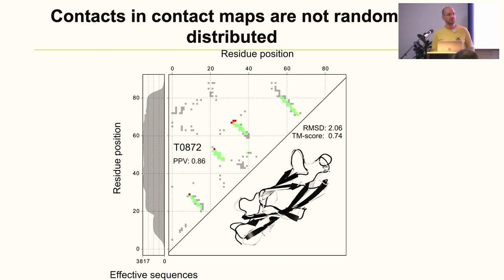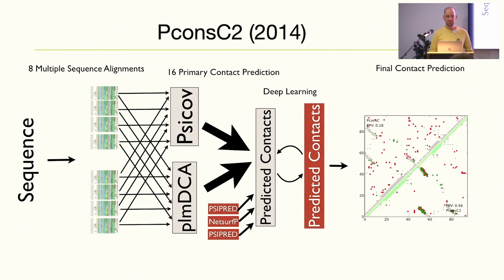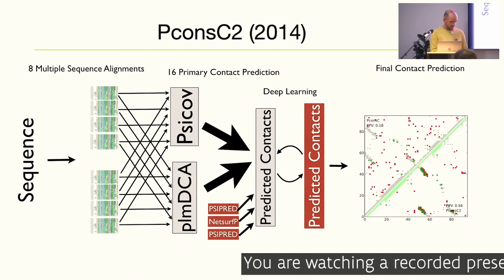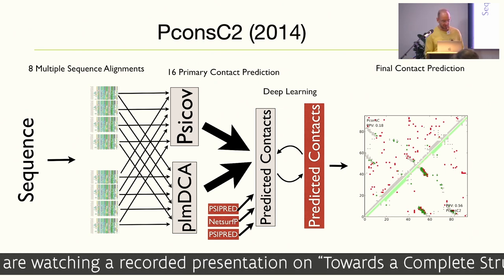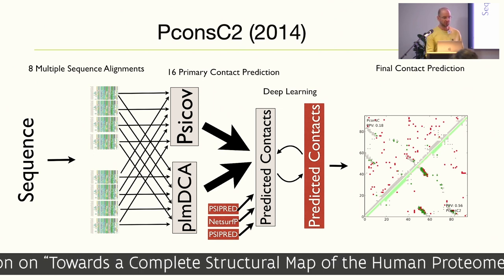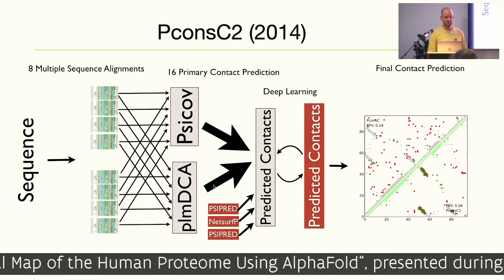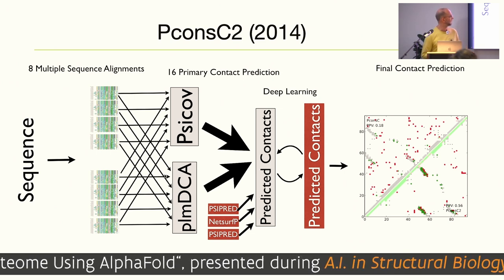For example, if you have one contact here and one contact there, it's likely to have a diagonal along it. If you have a single isolated contact with nothing around it, it's quite likely a false positive. We did this in 2014 — our first attempt with naive deep learning methods. We took two co-evolutionary methods — PLM-DCA and Psicov — along with different multiple sequence alignments, giving eight different inputs.